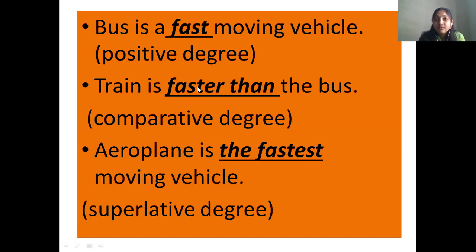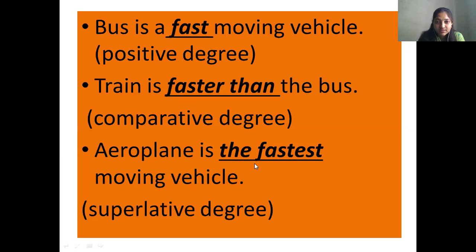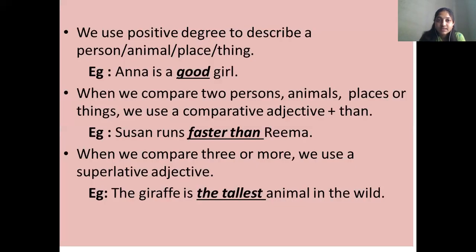In the first sentence the describing word 'fast' changes to 'faster than' in the second sentence — that is the comparative degree. Now the third sentence: 'aeroplane is the fastest moving vehicle.' When I compare the speed of the aeroplane with both the bus and the train, I use the superlative degree — 'fastest.' So the aeroplane is the fastest moving vehicle.